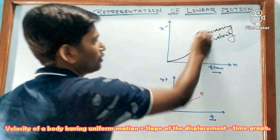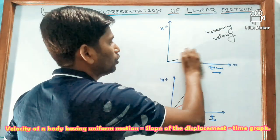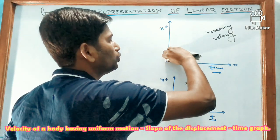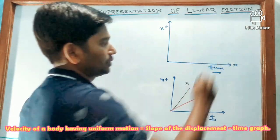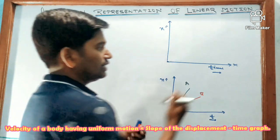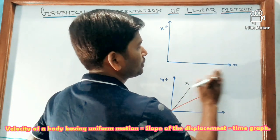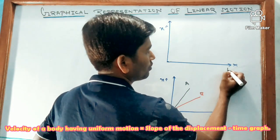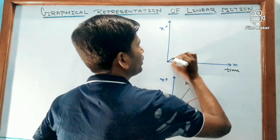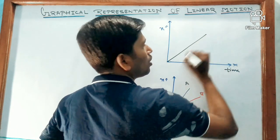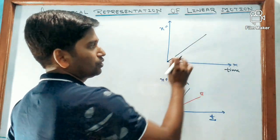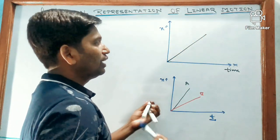Let us find the slope for a body moving with uniform velocity. This is the time axis and let a body be moving with uniform velocity. So this is the graph.